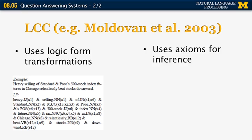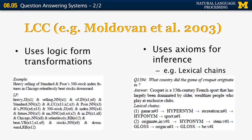The system uses different semantic axioms for inference. For example, it uses lexical chains from WordNet. If the word 'game' is related to 'recreation' and 'recreation' is related to 'sport,' it's able to use this lexical chain information to find answers even if they don't contain any of the words in the original question.